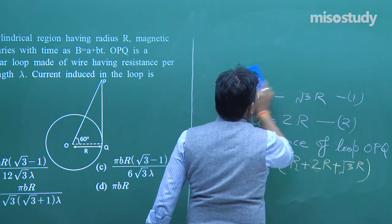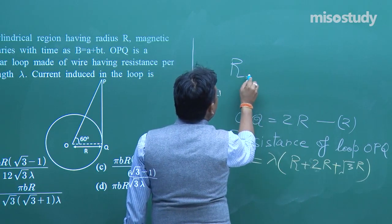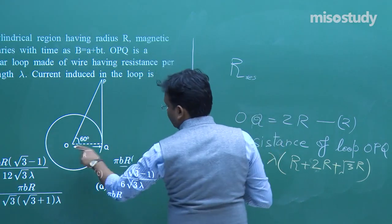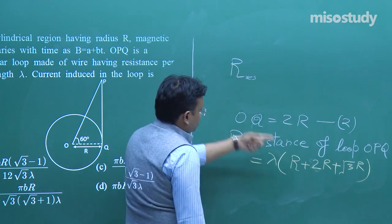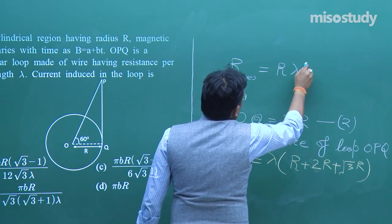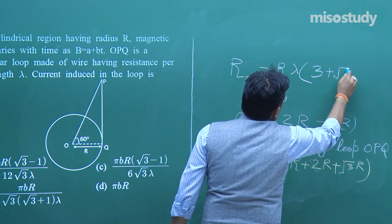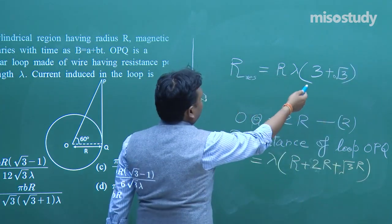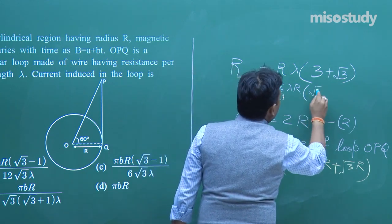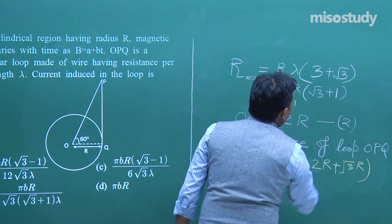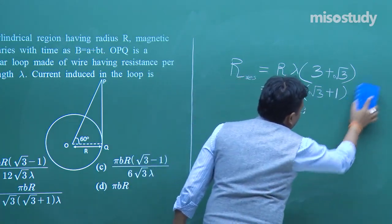Writing this result clearly using the diagram: resistance R_loop = λR(3 + √3) = √3λR(√3 + 1). Note: do not confuse this R (resistance) with the radius R. In the original problem statement the notation was slightly confusing, which is why I am distinguishing them with a subscript.